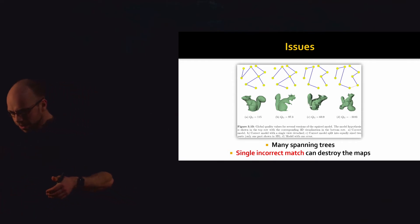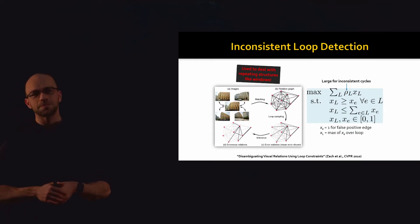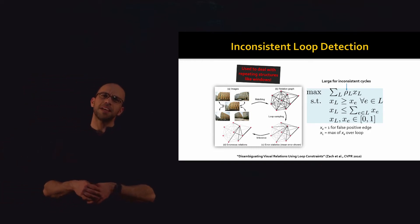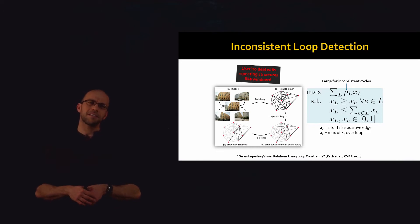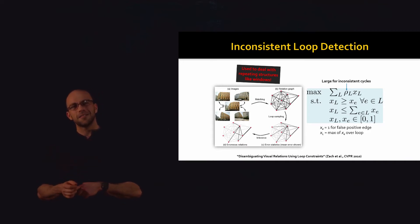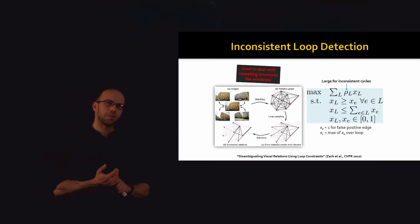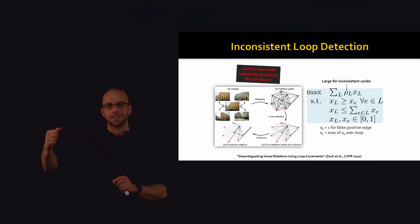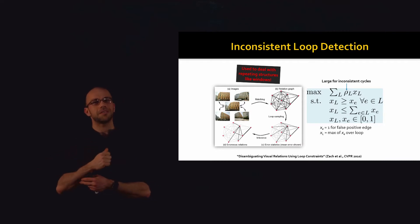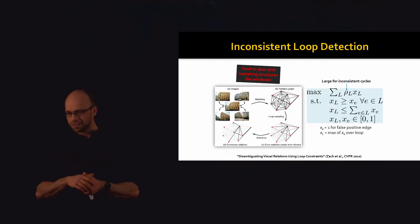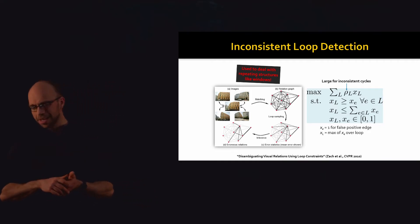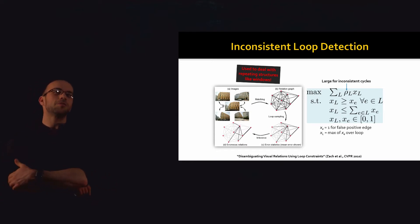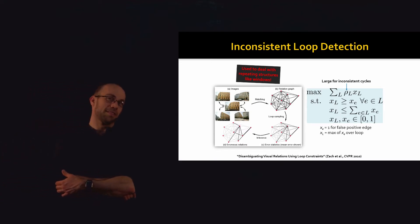Jumping forward about 10 years, people started thinking about consistency in many different fashions. One of the earliest problems studied was not necessarily to repair mappings, but to find bad maps in a collection. We continue using the same graph data structure — different views as nodes and maps as edges — and one of the really fun problems, originally proposed in a 2010 CVPR paper, is to detect inconsistent loops and use that to detect bad mappings.